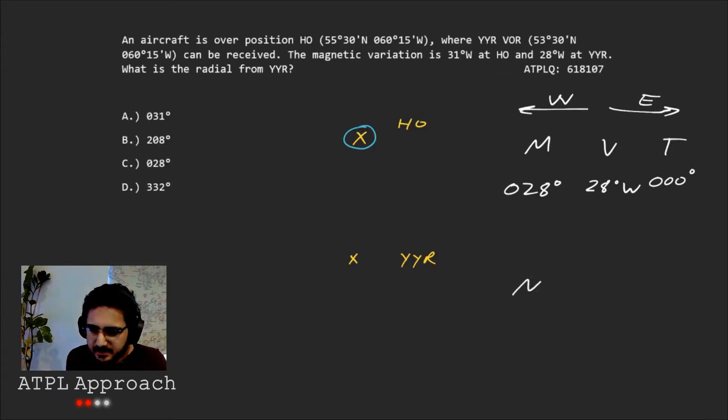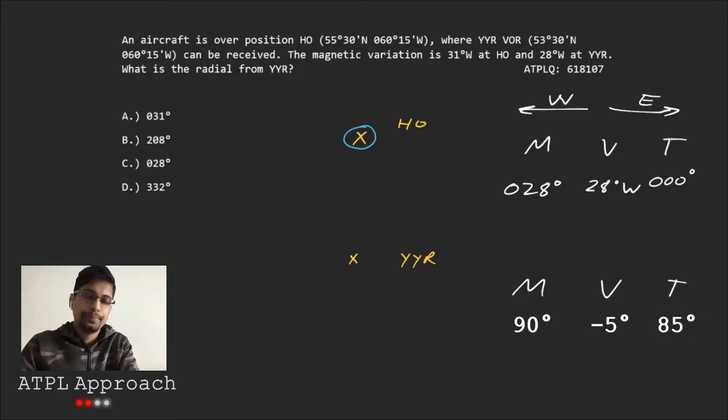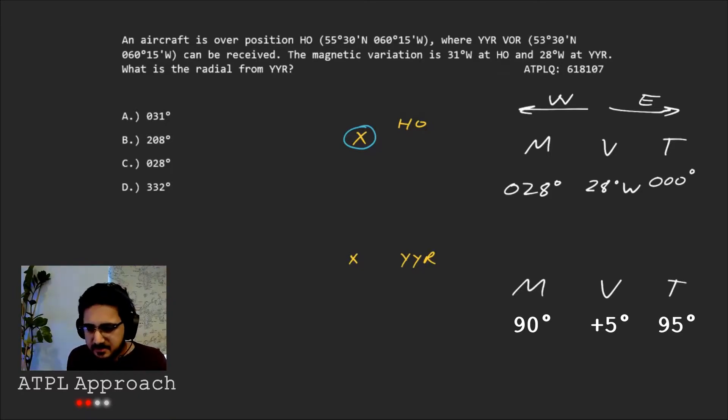So if this was east, right, then this and this would be opposite. Right. And then we'd subtract. So that is just the direction in which you're going. Because we're going to the left, right, and because it's west, we add. So we get to 028 degrees.